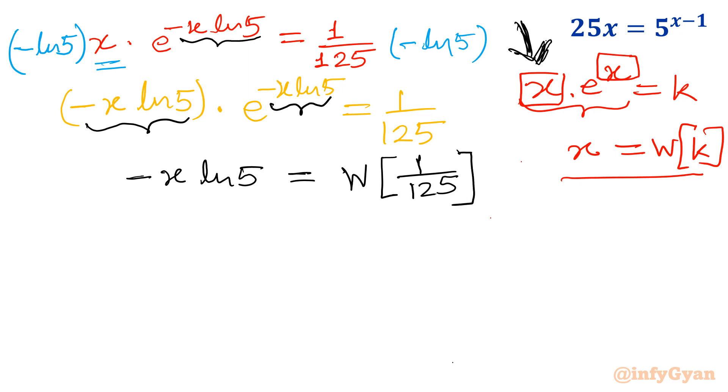And see what was missing? That is minus ln 5. So that will be minus ln 5. Now x is required. So I will write x would be equal to minus Lambert W minus ln 5 over 125 divided by ln 5.